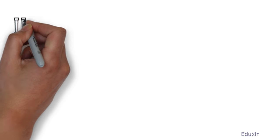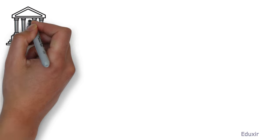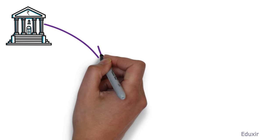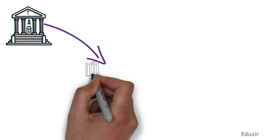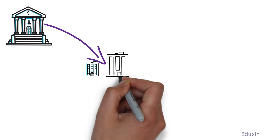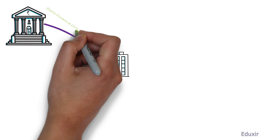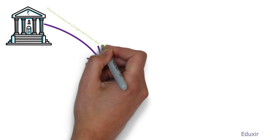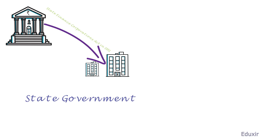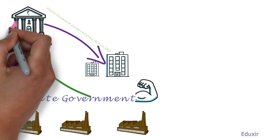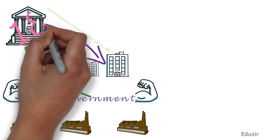State Financial Corporations, abbreviated as SFCs, were established to meet the financial needs of small and medium enterprises through the State Financial Corporations Act in 1951. The act empowers state governments to establish a bank that cater to the development in their respective states. As of now, there are 18 SFCs.